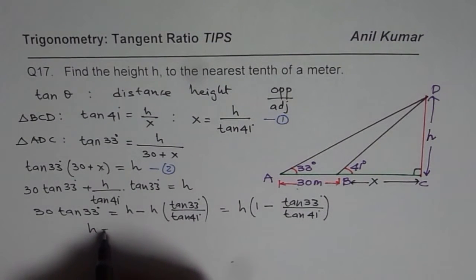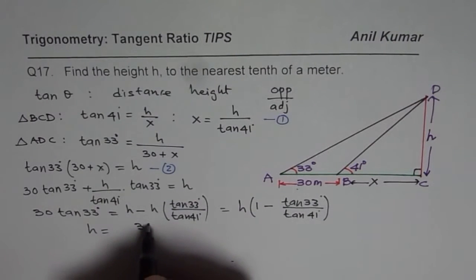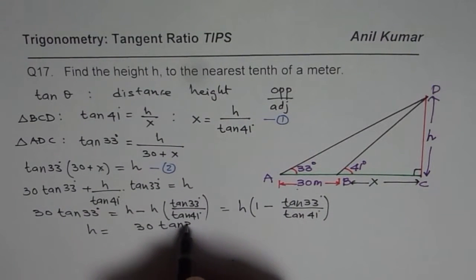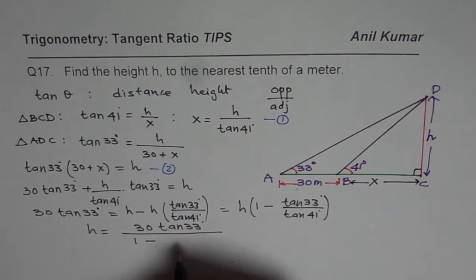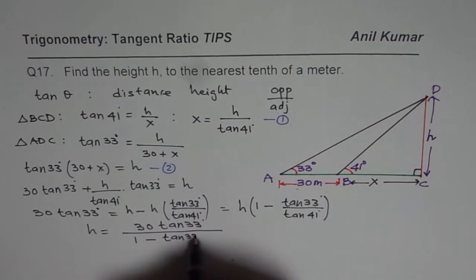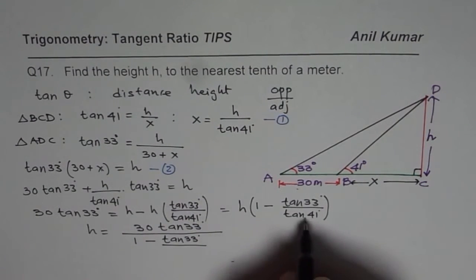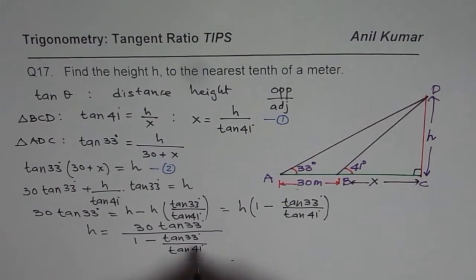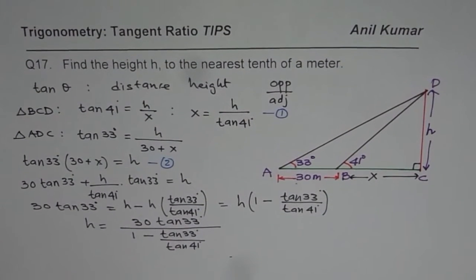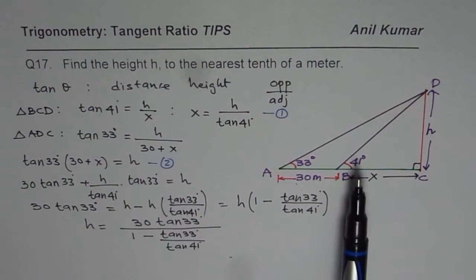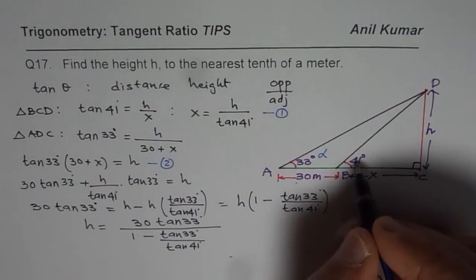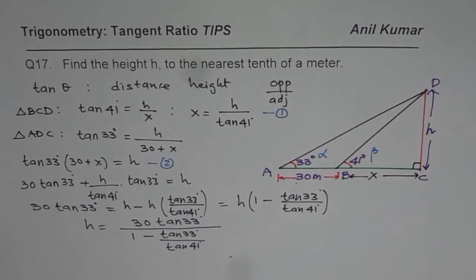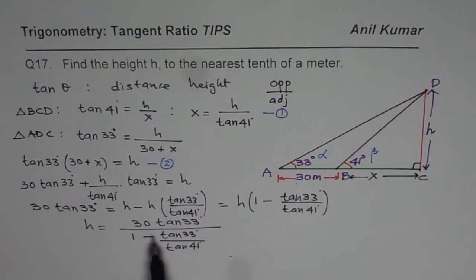So we have a very general solution. Now the importance of this solution is that if I replace 33 by any angle α for example, and 41 by any angle β, then I get a general formula here. Let me write down the general formula.